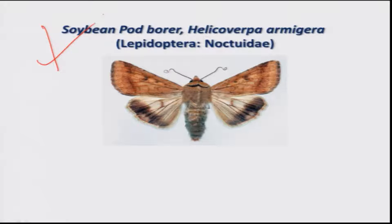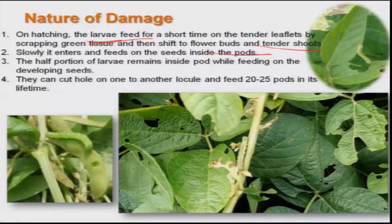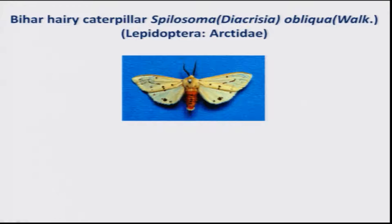Next is soybean pod borer, Helicoverpa armigera, which is again a polyphagous pest on many commercially grown crops. The larvae is the damaging stage, preferring to feed on tender shoots as well as developing pods. During the fifteen-day larval period, it can consume twenty to twenty-five pods, resulting in significant yield loss to the soybean crop.